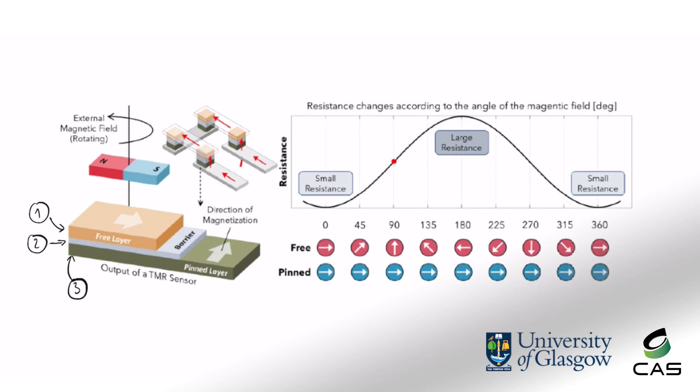The change of resistance occurs due to the dependence of the tunneling probability on the relative orientation of magnetization in the two ferromagnetic layers, which are a free layer and a pinned layer. The largest and lowest resistance values are obtained when the ferromagnetic layers have anti-parallel and parallel orientations respectively.